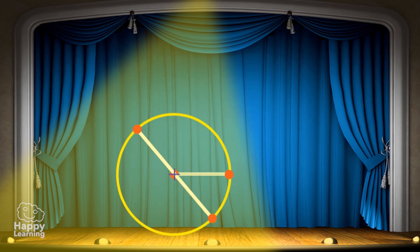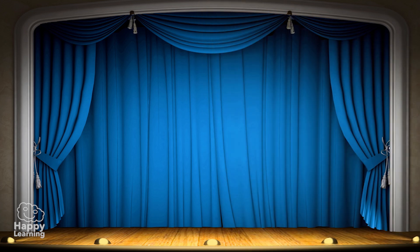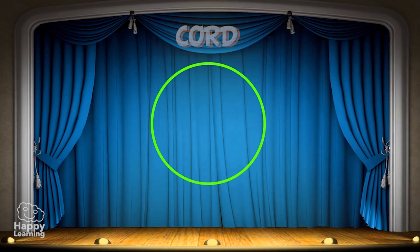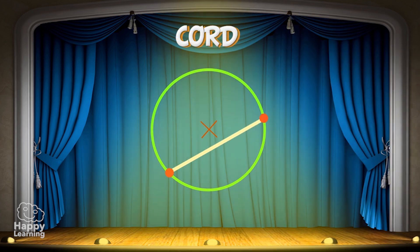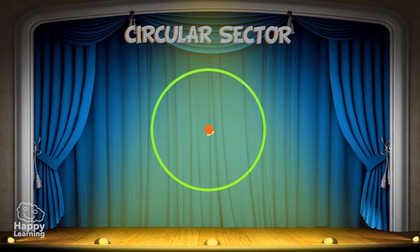But there are another three elements we should learn about. The cord is a line between two points on the circumference which does not go through the center. The arc is the part of the circumference which is in between two points. And the circular sector is the proportion of the circle which lies in between two radiuses and the arc.